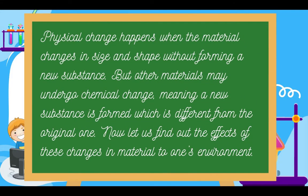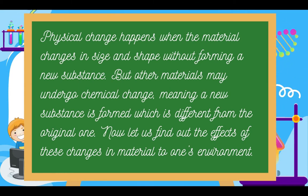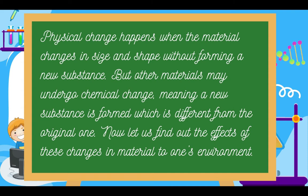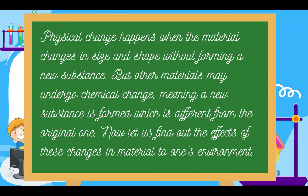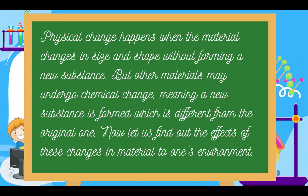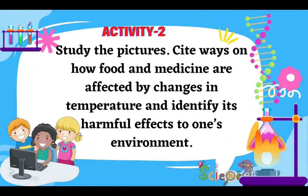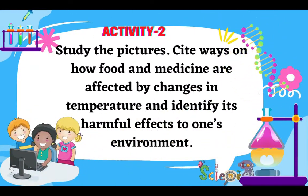Physical change happens when materials change in size and shape without forming a new substance. But other materials may undergo chemical change, meaning a new substance is formed which is different from the original one. Now, let us find out the effects of these changes in materials to one's environment.